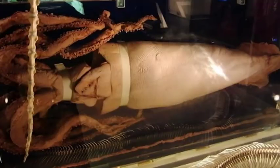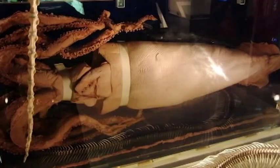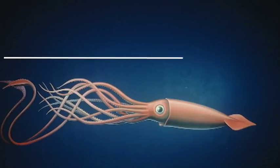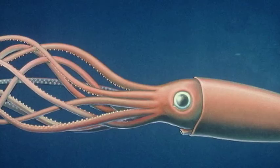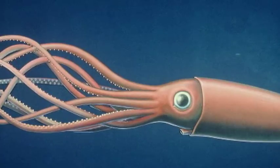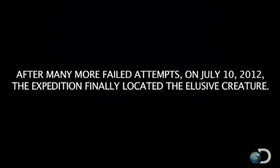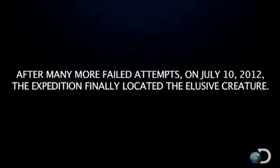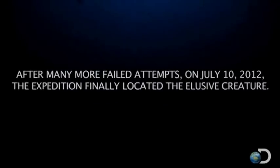Currently, we know that there are eight identified species that fall into the group of giant squids. They're very large in size, with an average length in females up to 43 feet. Their eyeballs are as big as basketballs, and their brains surround the inside of their mouth. In fact, if they eat too much, they give themselves brain damage. It wasn't until 2012, in a joint venture with the Discovery Channel, that the giant squid was finally discovered live in its own habitat.